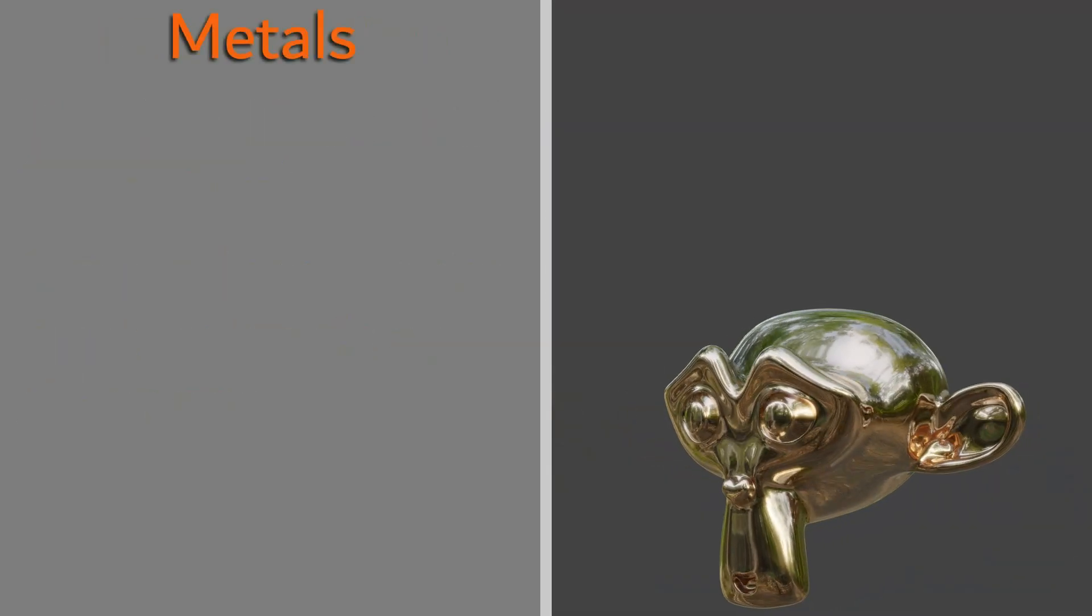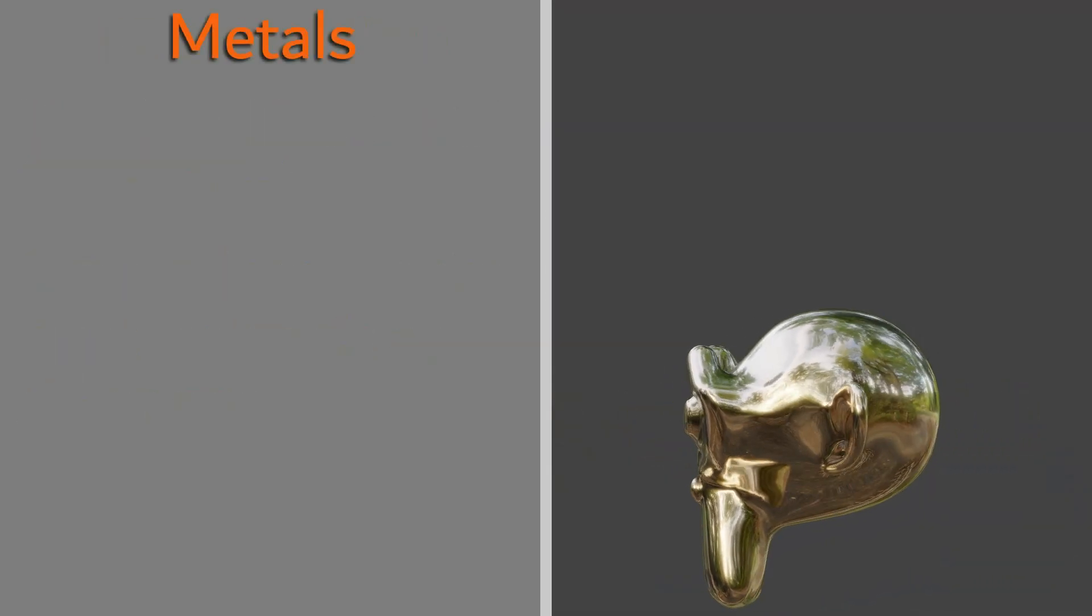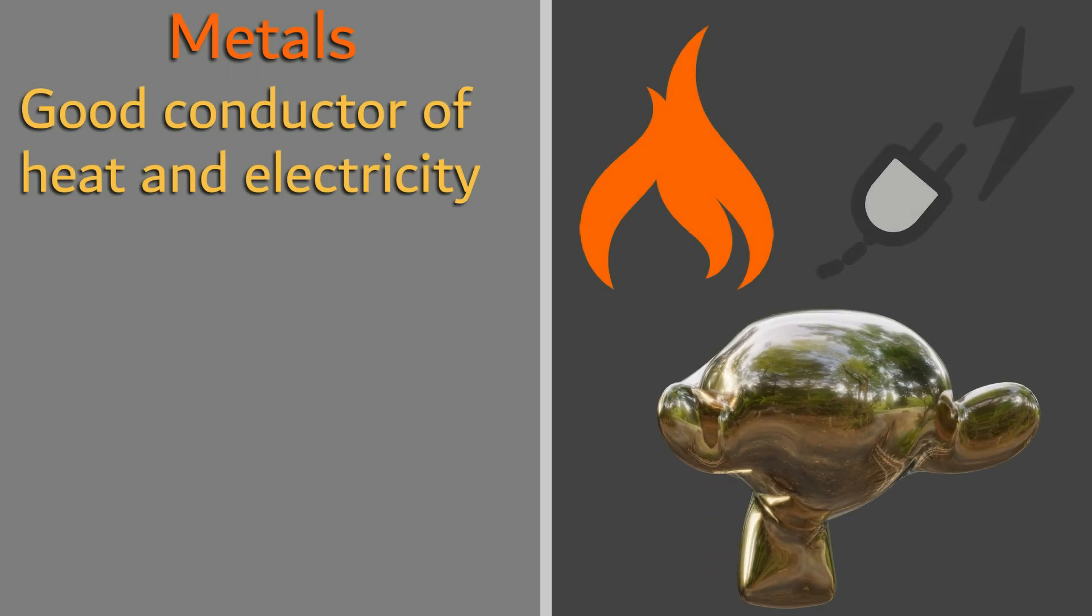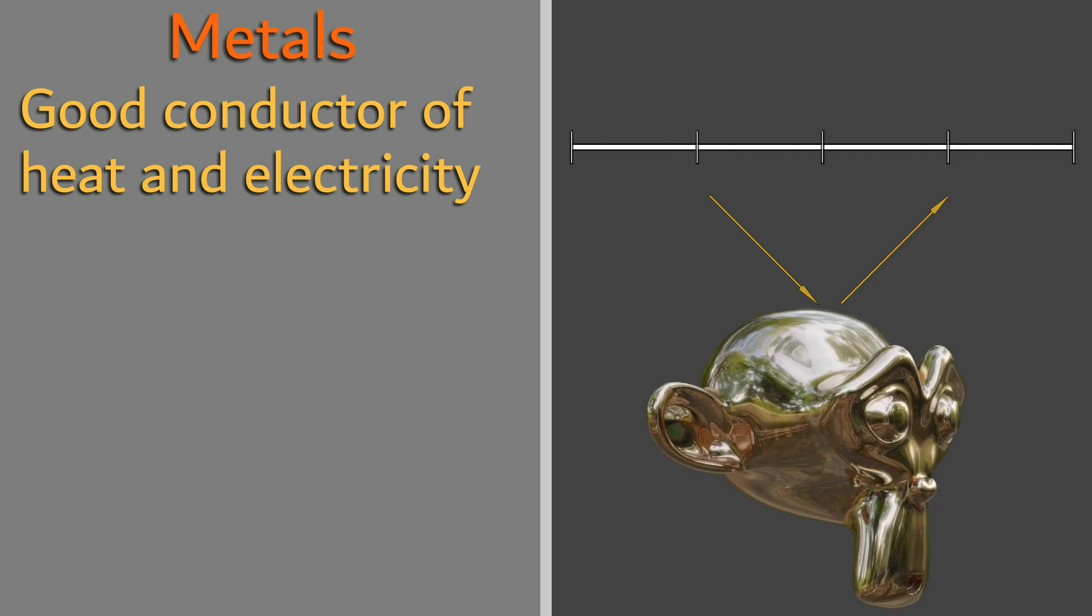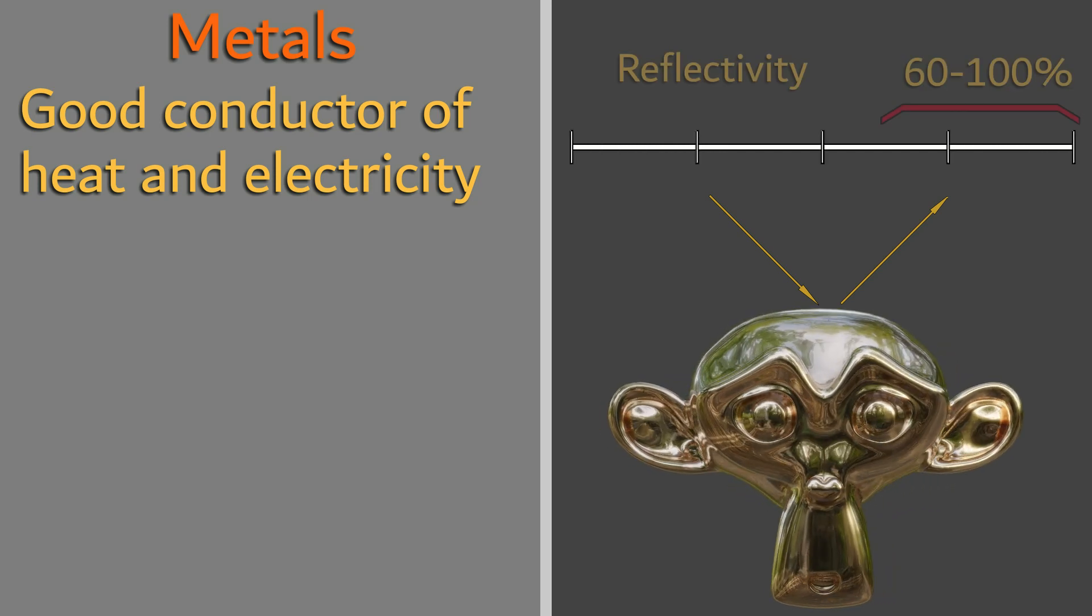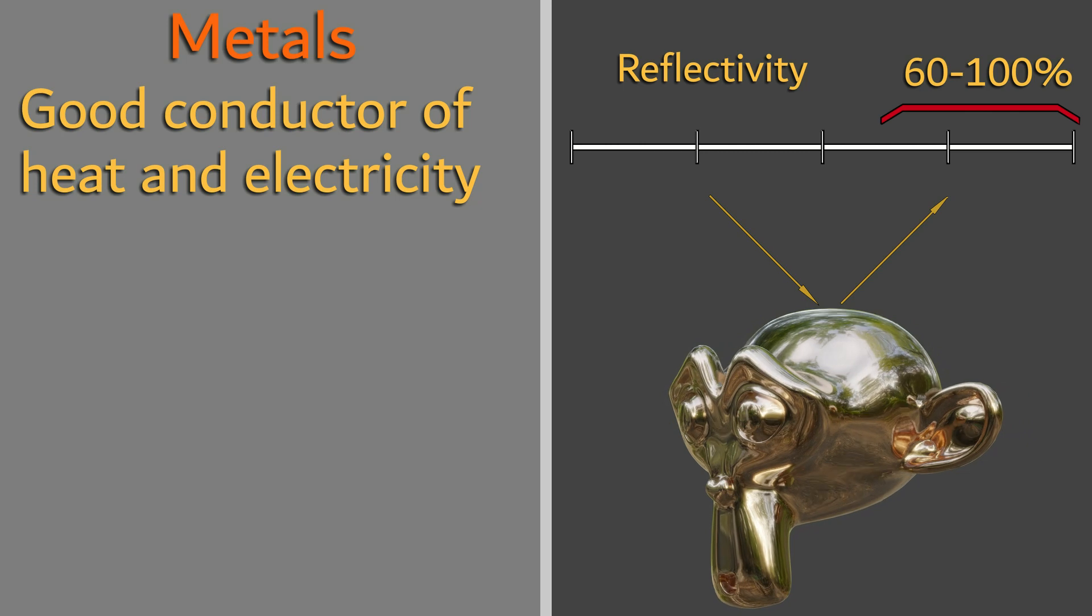Metals are good conductors of two types of energy, being heat and electricity. Conductors usually tend to show reflectivities at the higher end of the spectrum, roughly anywhere from 60 to 100% reflectivity.